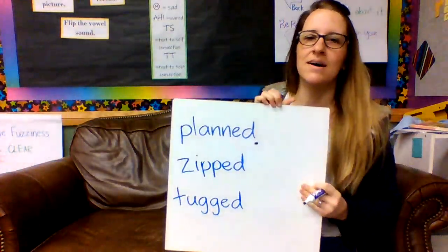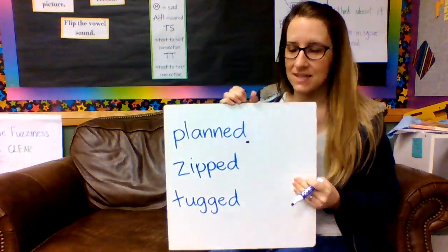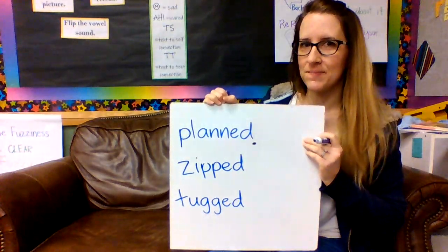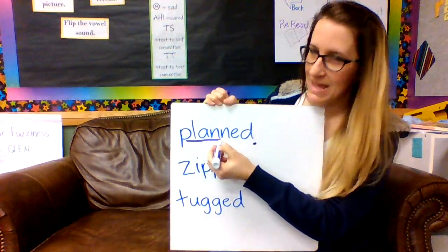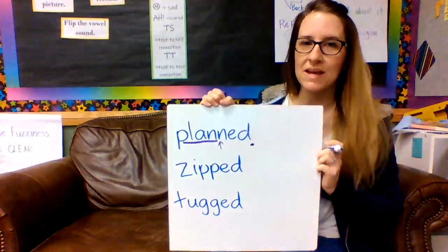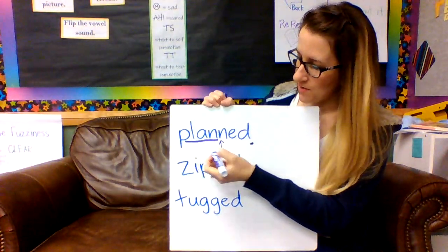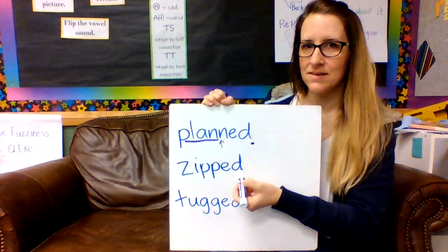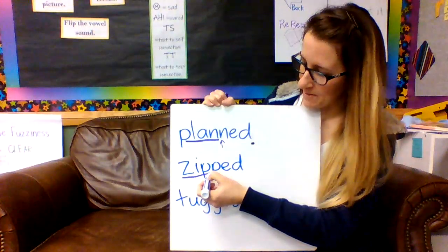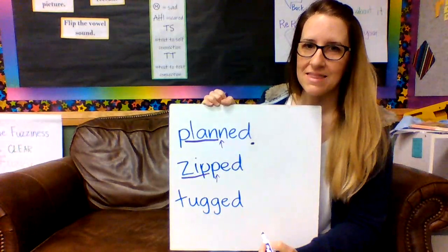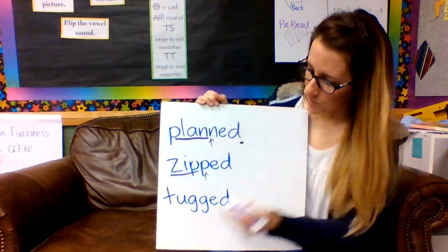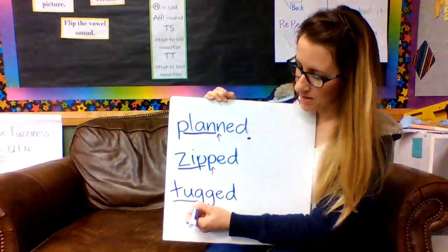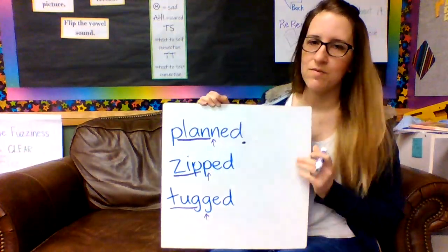Here are some more examples of words where we had to double up that final consonant. Let's see if you can find the base word in planned. The base word is plan — we had to double up that N before we can add -ed, to protect that short vowel from that bossy E. Next word: zipped. The base word is zip, and we had to double up that P before we add -ed. Same thing with tugged — the base word is tug, and we had to double up that G before we add -ed.